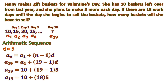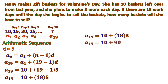Then we will simplify. So 19 minus 1 is 18, then 18 times 5 is 90. Then we'll add 10 plus 90, it will be 100. That means at the 18th day, there will be 100 baskets in all.